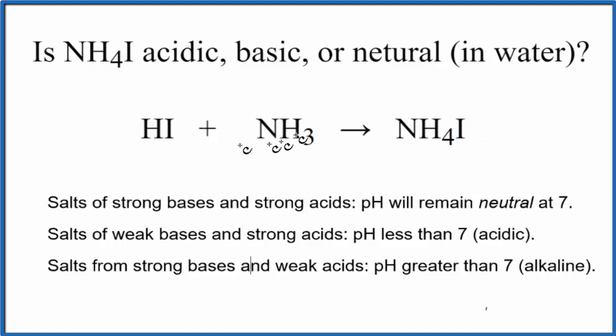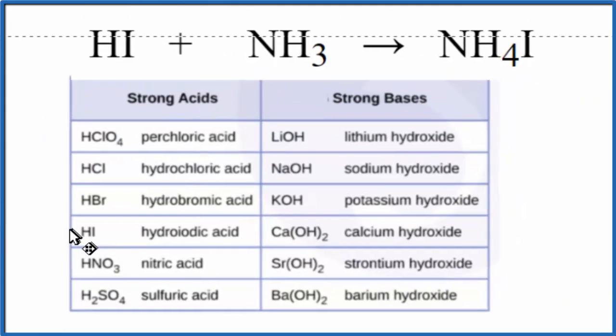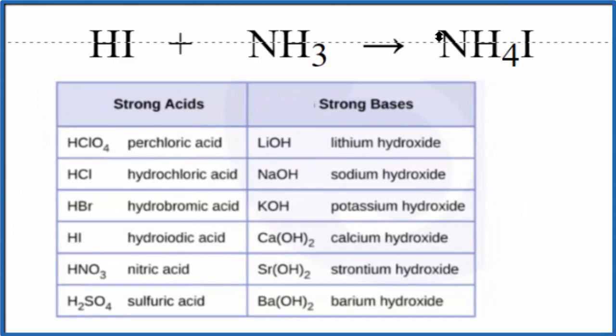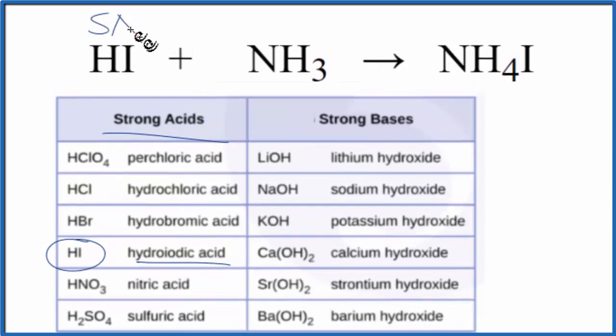we need to figure out the strength of the acid and the base that produce the ammonium iodide. This table here is really helpful, probably one you should memorize. On the table, we're looking for HI, hydroiodic acid, which is right here. That's a strong acid.